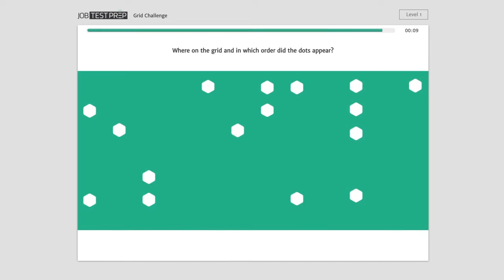In the next stage, the test returns to the original grid. Do you remember where the highlighted dot was located? In the P&G Online Assessment, you will need to memorize between 2-5 dot positions and the order of their appearances. This part of the test takes about 9 minutes.